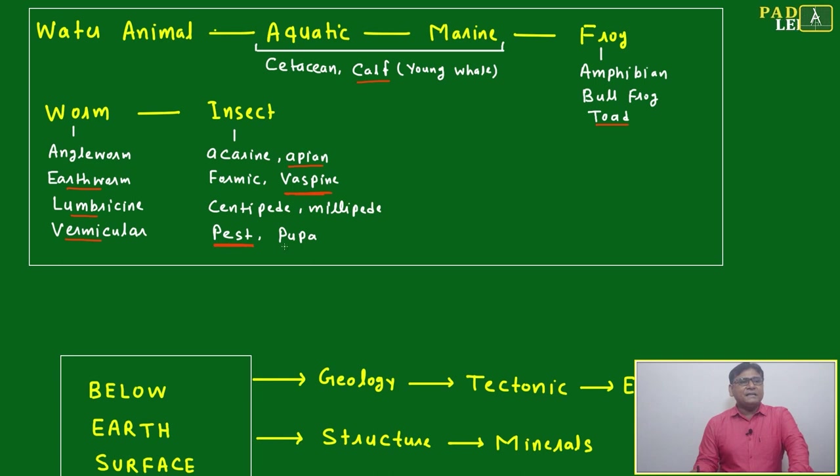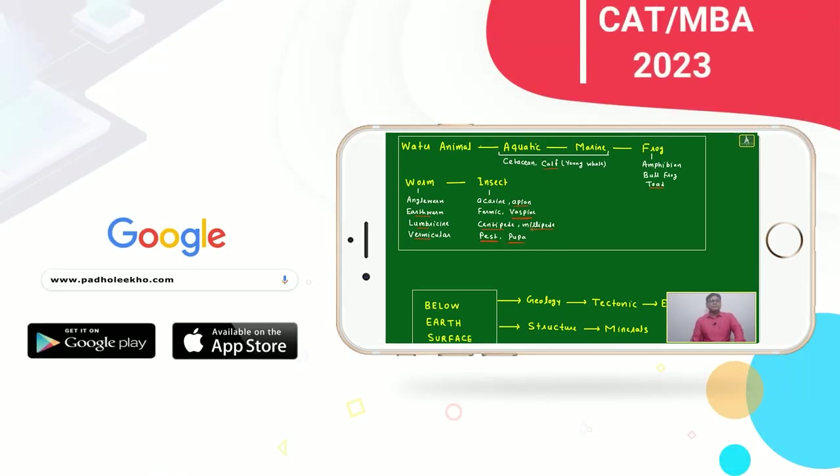Pupa we know. Millipede, centipede, these all are the different names of insects. Centipede means two, two different means mouth or body will be there. Multi, millimeter will be.